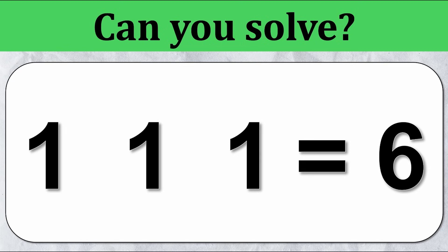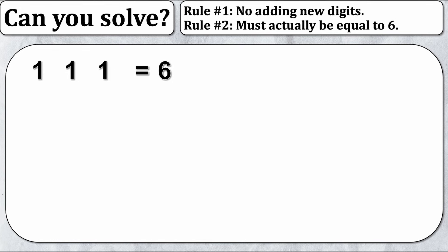Can you solve this math puzzle? We have three ones and we want them to equal six by just applying some basic math operations. There's only two rules. Rule number one is no adding any new digits, and rule number two is that the equation must actually equal six. There's no funny business happening here.